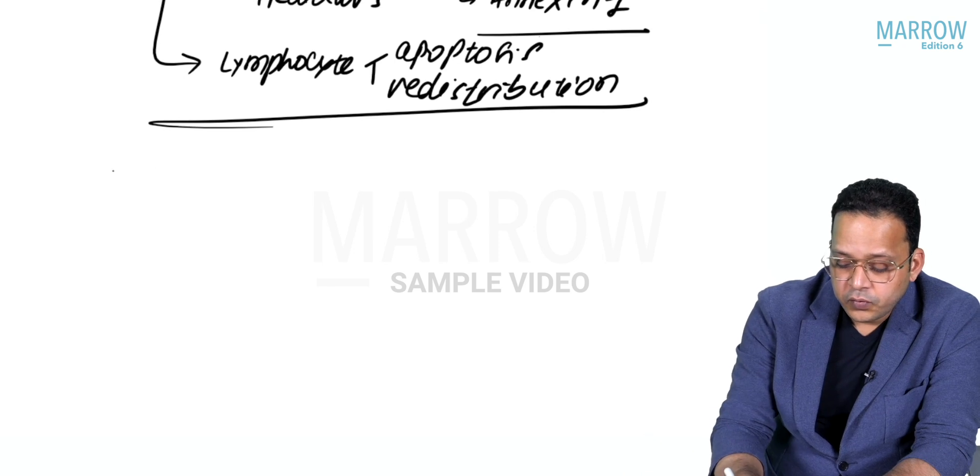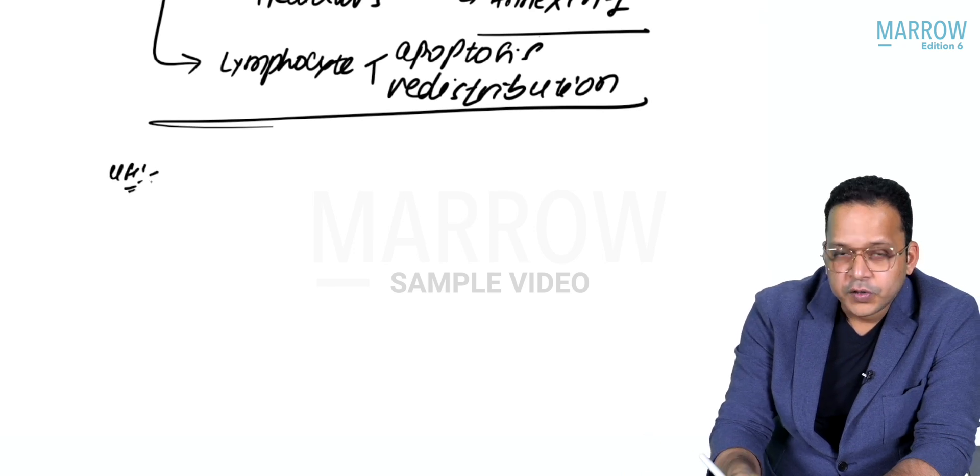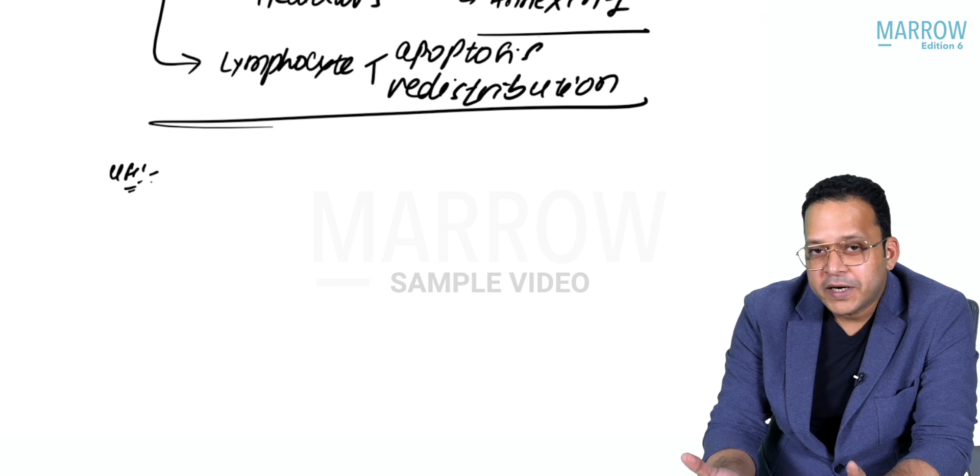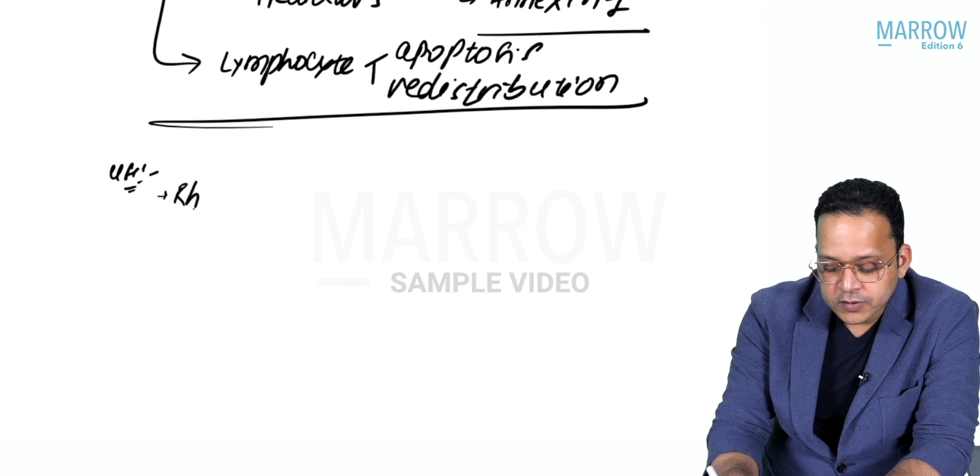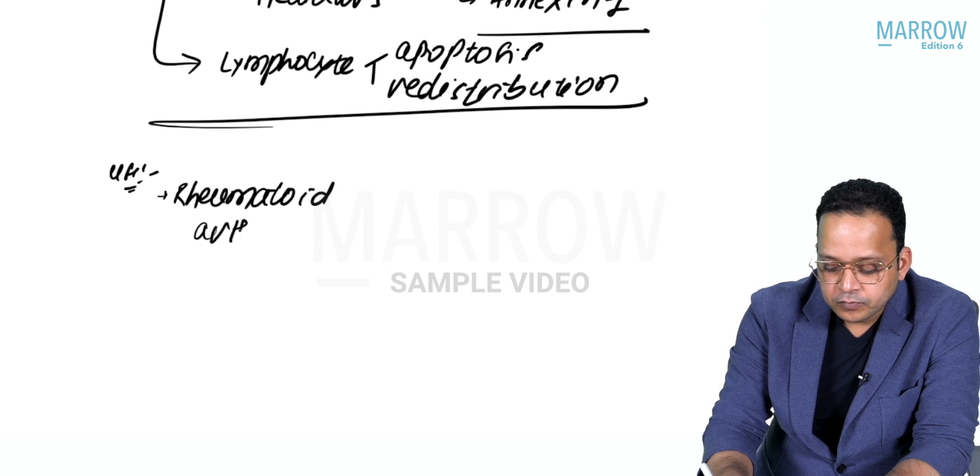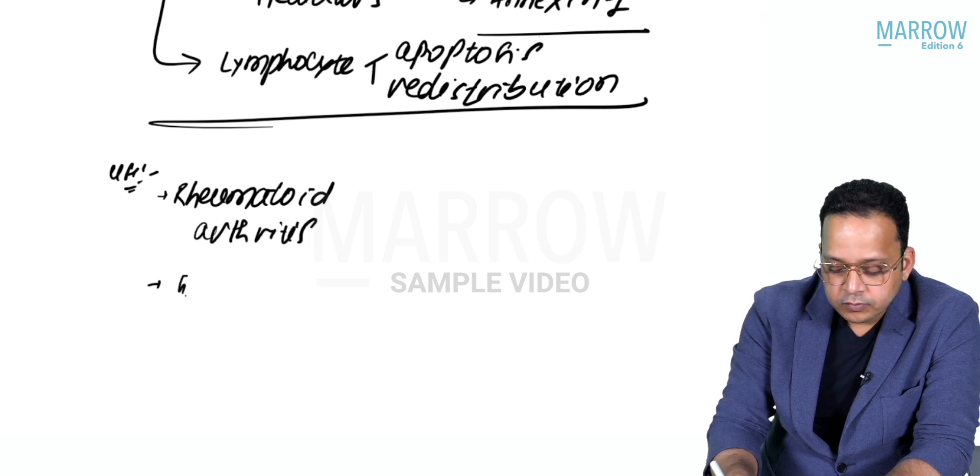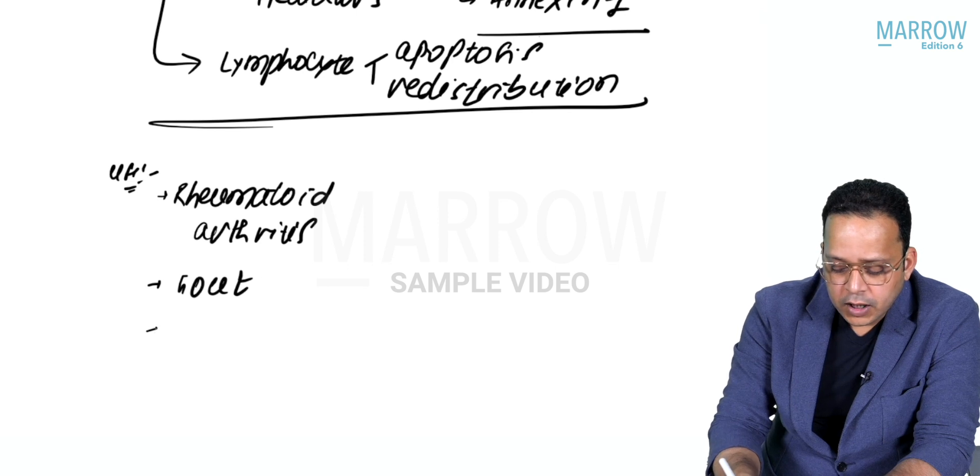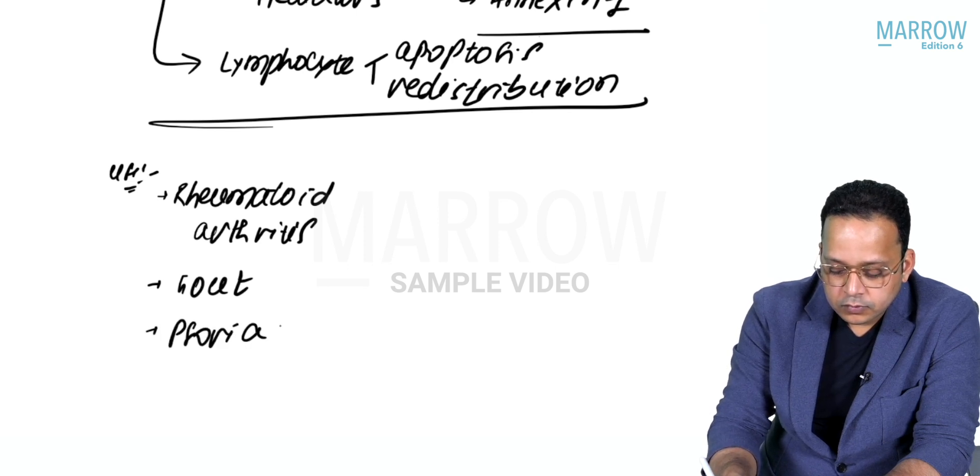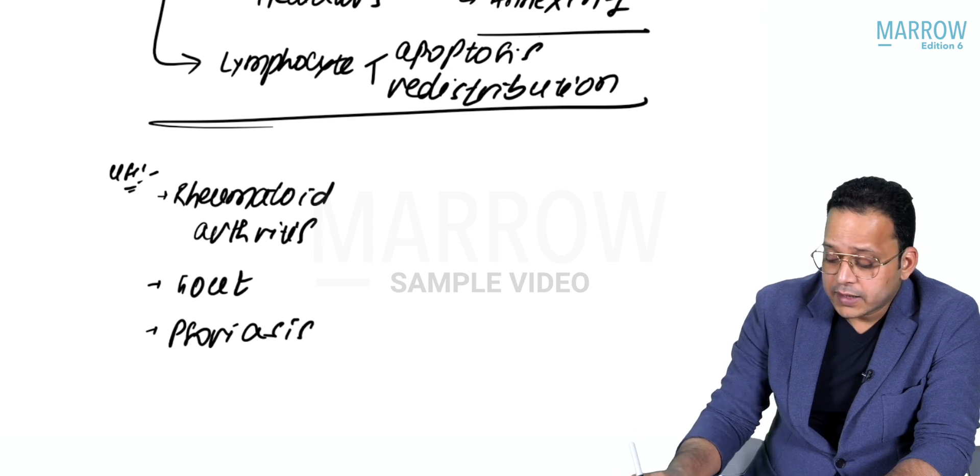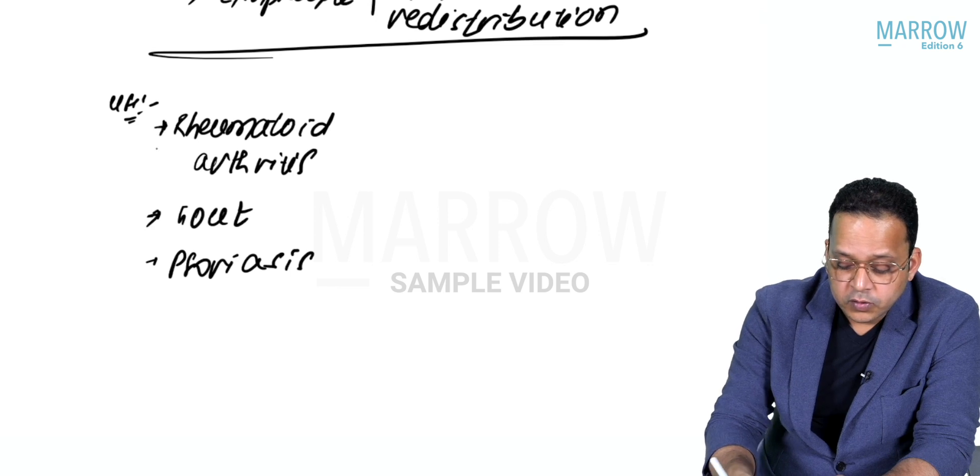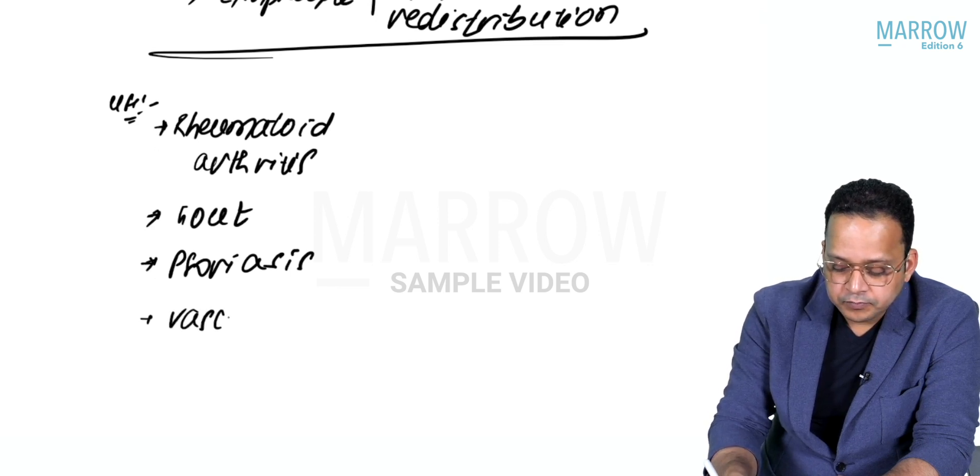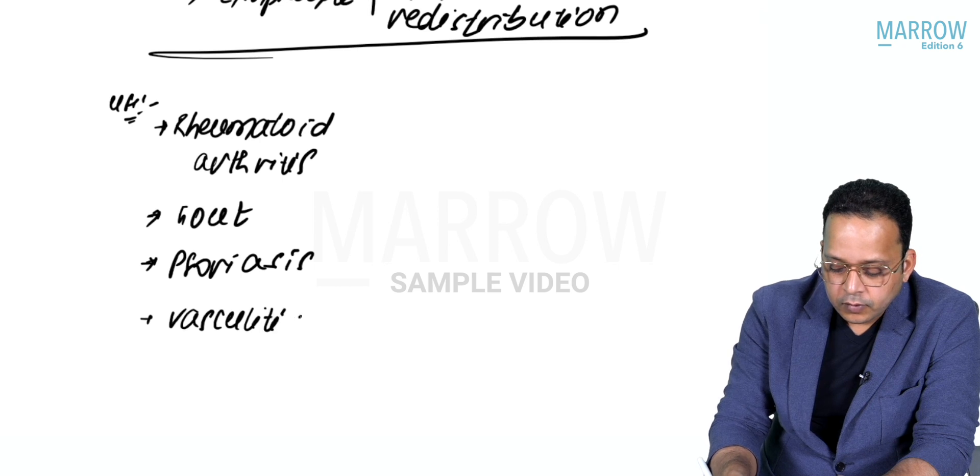Because of these we can have uses of two types: inflammatory conditions and autoimmune conditions. Inflammatory conditions where I can use steroids: rheumatoid arthritis, gout, psoriasis, and vasculitis.